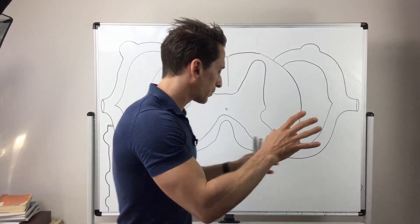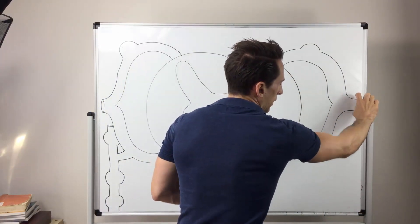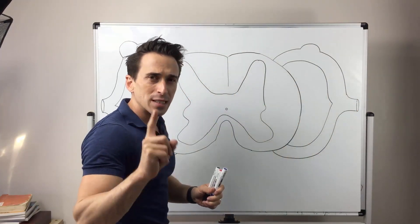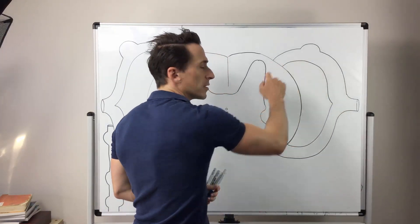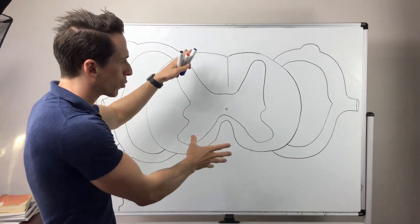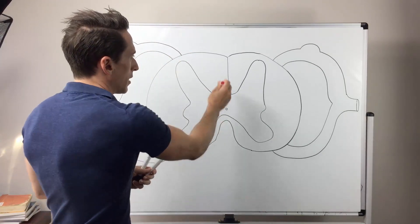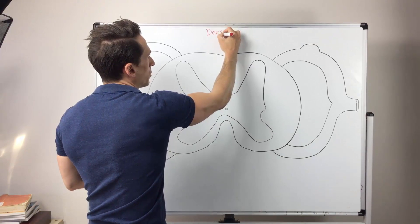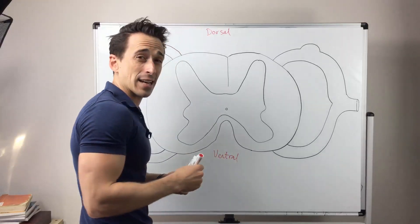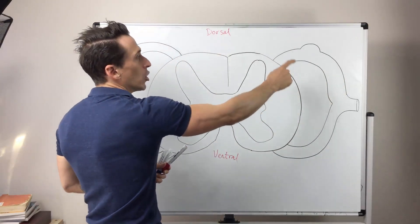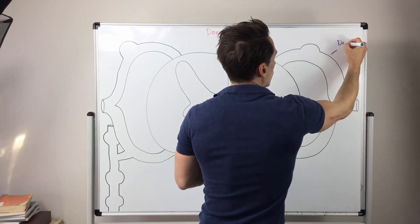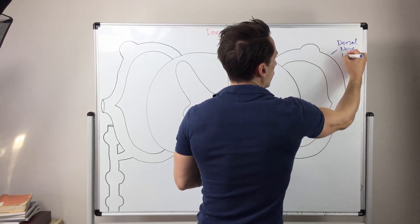Looking at this spinal nerve, you can see two roots come into one. There are very specific neurons that move through each root. To identify them, we need to know what's the front and what's the back. This is the back — we call this dorsal. This is the front — we call this ventral. The nerve at the back is called the dorsal nerve root.